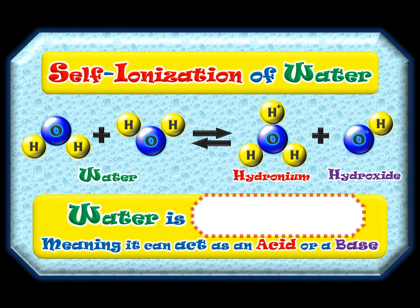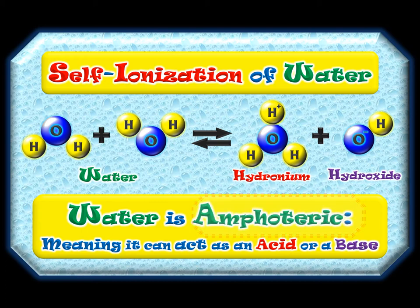What's the name for something that can make hydronium sometimes and hydroxide other times — that can act as either one? Amphoteric. That's a tricky technical word, but it basically means a chemical that can act as an acid or as a base.